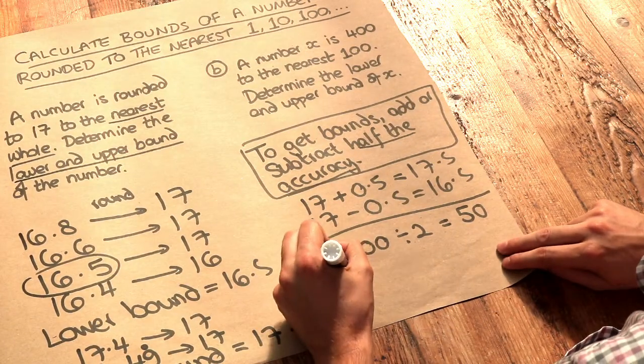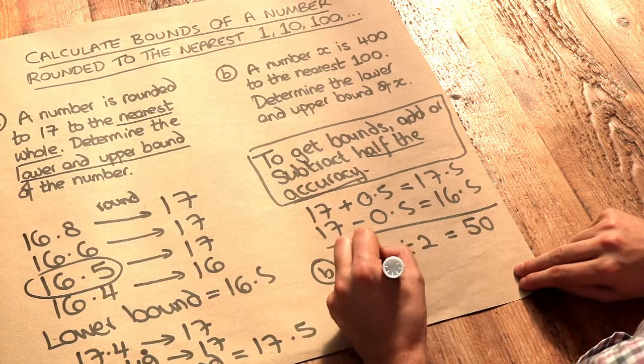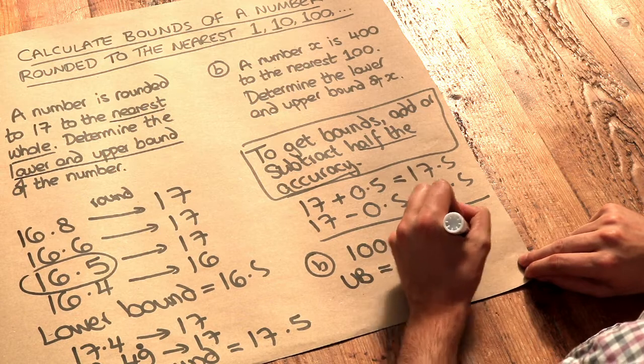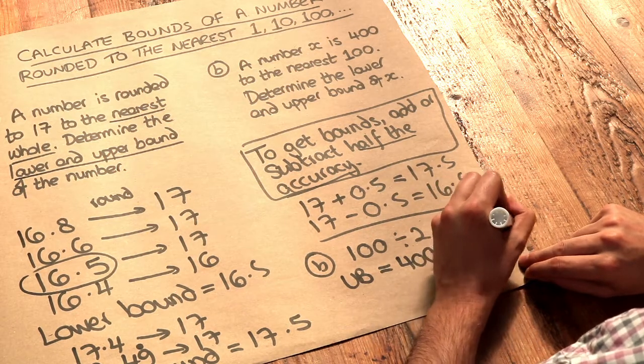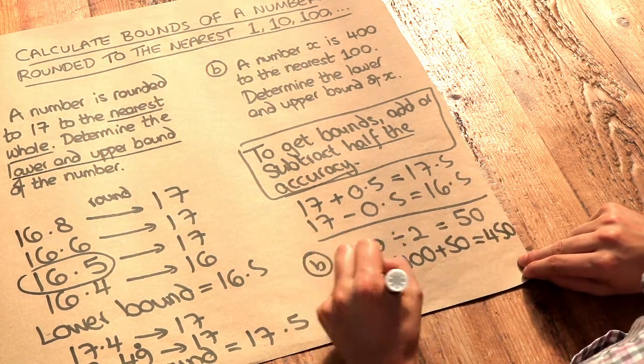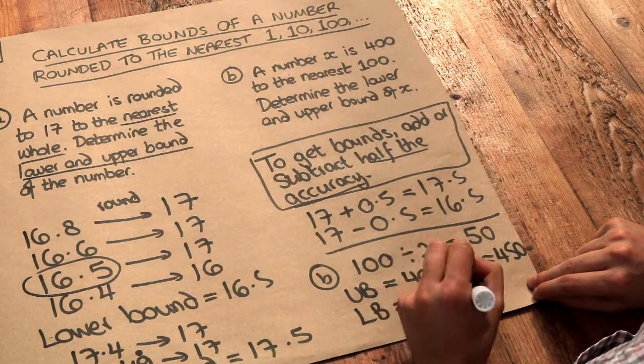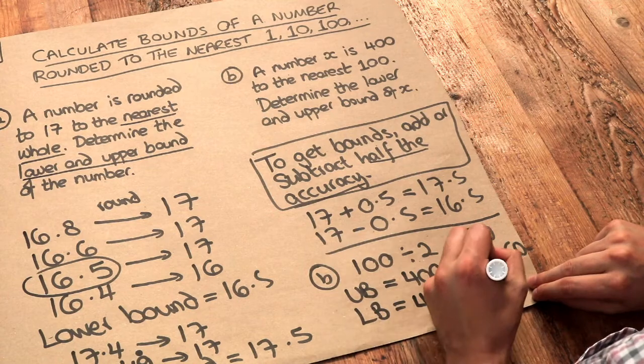So the upper bound, or UB for short, is going to be the original number plus half the accuracy is 450. And then the lower bound, or LB for short, is going to be that number 400 minus half the accuracy of 100. And that's going to be 350.